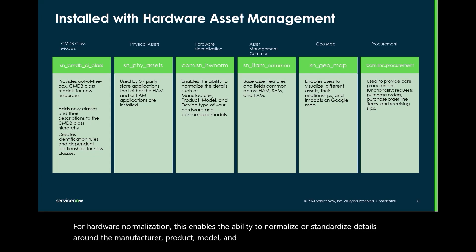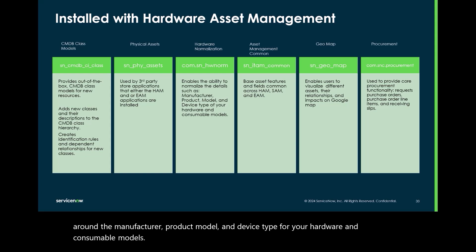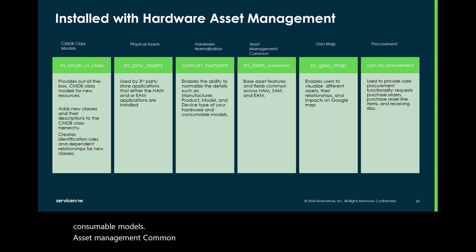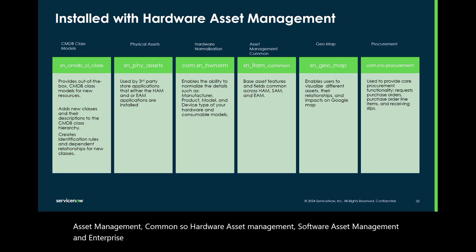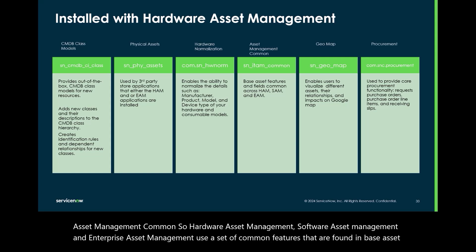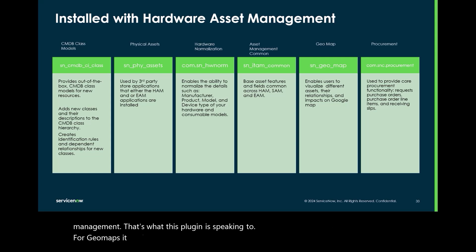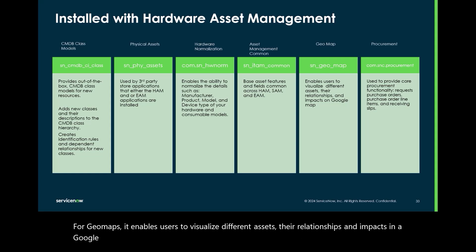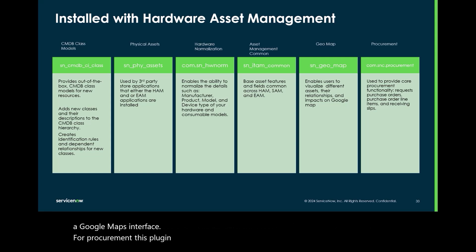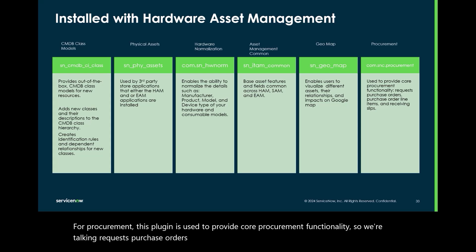Asset Management Common — hardware asset management, software asset management, and enterprise asset management use a set of common features found in base asset management, and that's what this plugin is speaking to. For Geo Maps, it enables users to visualize different assets, their relationships, and impacts in a Google Maps interface. For Procurement, this plugin provides core procurement functionality — requests, purchase orders, purchase order line items, and receiving slips.